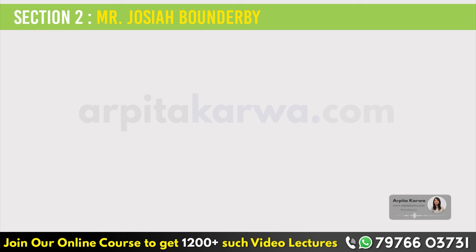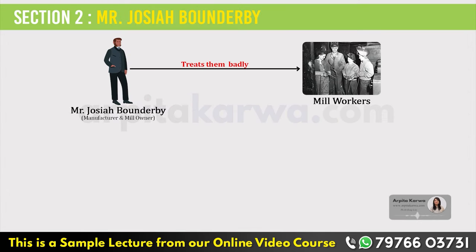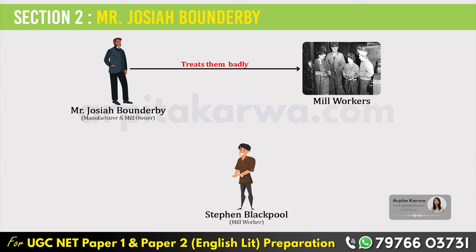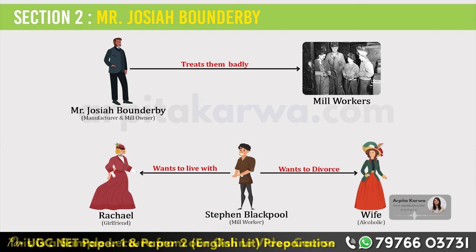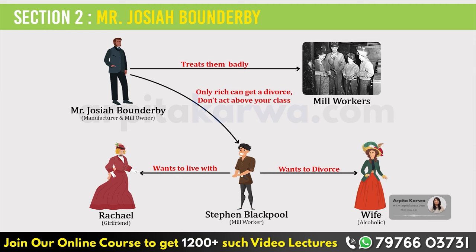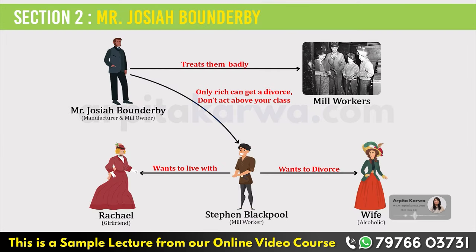Now we meet the antagonist of the story, Mr. Gradgrind's friend Mr. Josiah Bounderby. Mr. Bounderby is a manufacturer and mill owner who treats the workers in his factory very cruelly. Among the many workers is Stephen Blackpool, who is unhappy with his marriage — nothing more than a burden — and wants to live with his lover Rachel, who also works in the factory. Being already married, he cannot live with another woman, so he goes to Mr. Bounderby, tells him about his situation, and asks for advice. Mr. Bounderby tells Stephen that only the rich can get a divorce, and that he could have gotten rid of his wife if he had money and hired a lawyer. But since Stephen has no money, he has to go on living his life as it is.